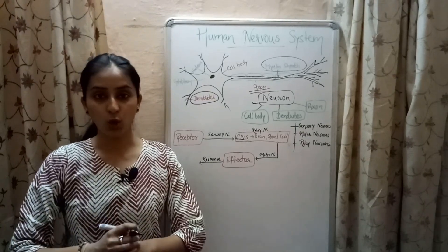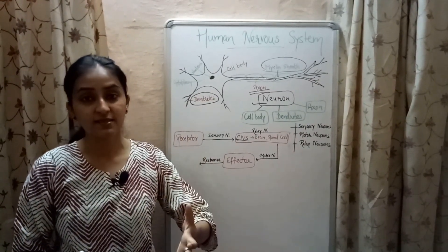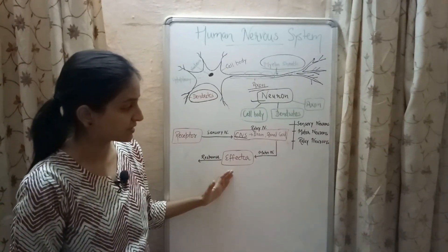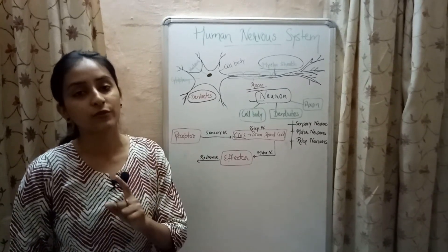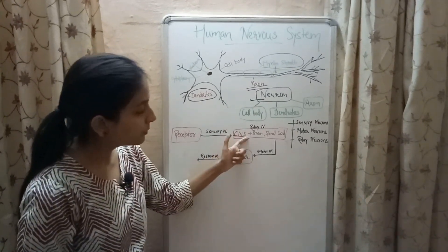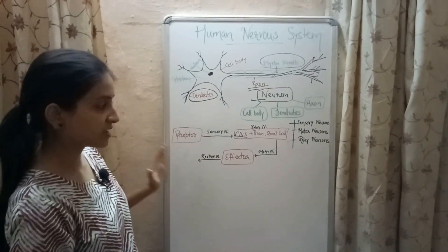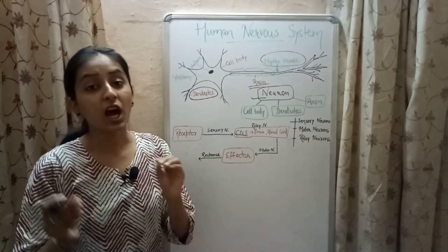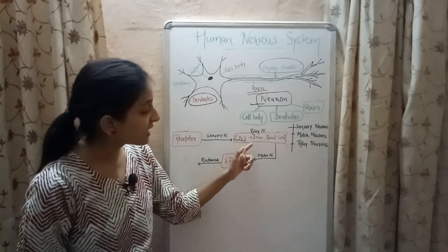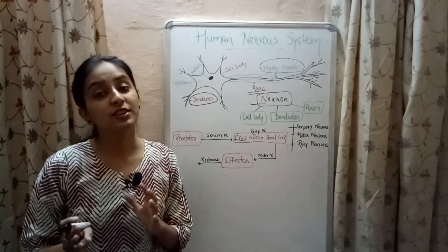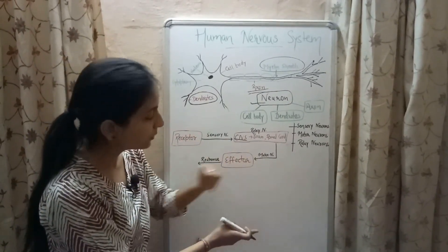The suitable response, again in the form of nerve impulse, is carried with the help of motor neurons to the effector. An effector is that part of the body which produces the response — for example your hand, your muscles, as well as your glands. Motor neurons transfer signals from the brain or spinal cord to the effector. Relay neurons are those neurons present inside the central nervous system that help in connecting the sensory neurons to the motor neurons.